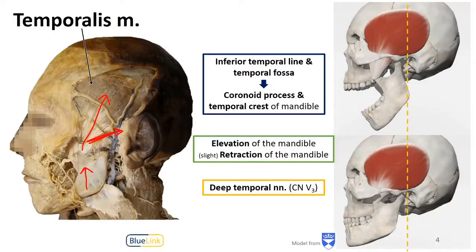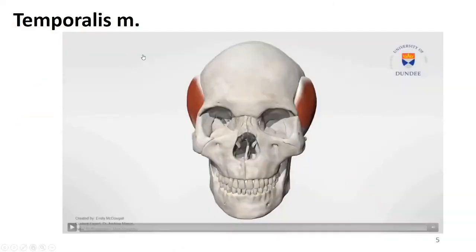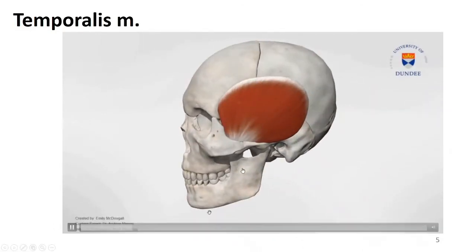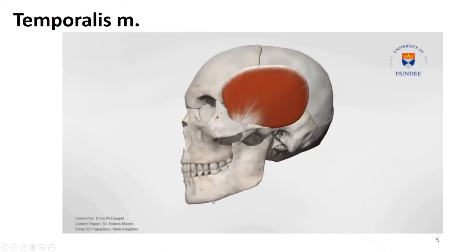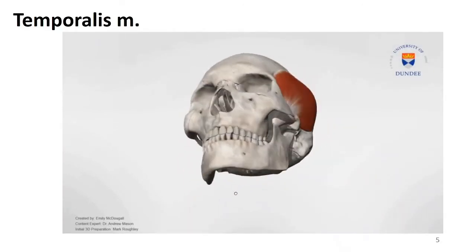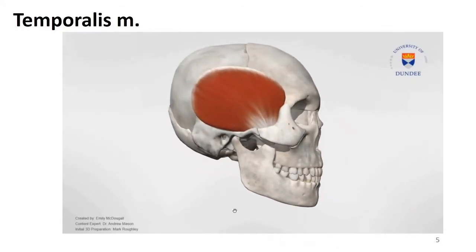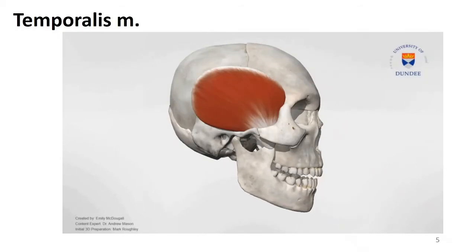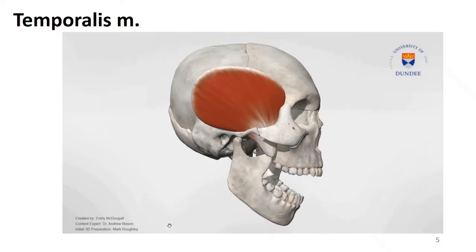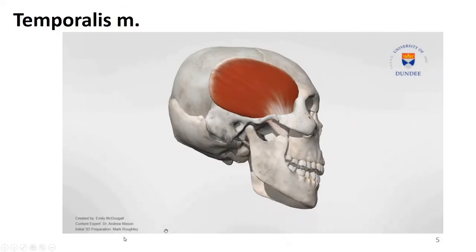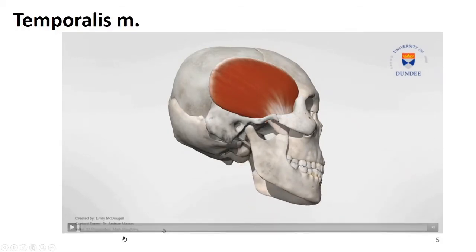The nerves to temporalis are called the deep temporal nerves. Looking at it isolated, we see the temporal fossa reaching down toward the coronoid process and the temporal crest of the mandible. When we animate the movements, we can see it stretches during depression and protraction, and then shortens in retraction and elevation.